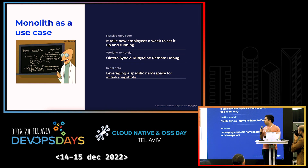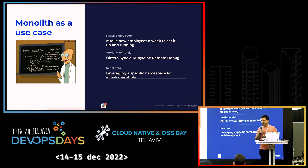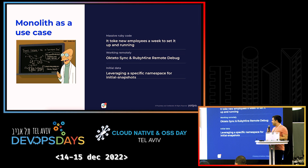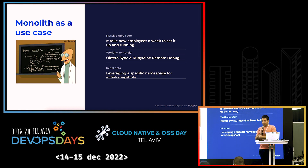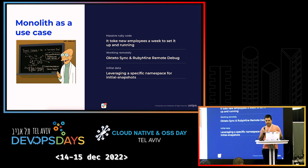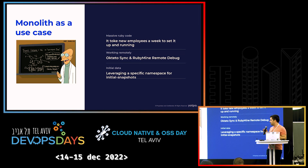Another cool feature addresses one of our biggest pain points — our monolith. Because it's running on old Ruby code, it used to take up to a week for a new developer before they could actually start working and developing on it. Using Okteto's remote debug features with file sync, we can raise a working remote debug environment for our monolith, allowing new developers to start debugging and running the service after just 20–30 minutes from their first day. When they start, they already get a database with an initial snapshot, so they don't need to create it or copy it from someone else — they get something fresh, new, and ready for work.